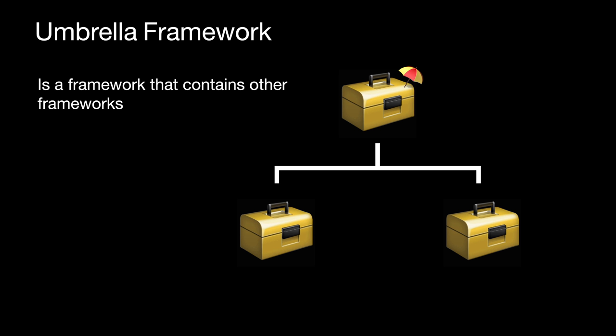An Umbrella Framework is a framework that contains other frameworks. You'll have a top-level framework with sub-frameworks. These sub-frameworks could be a dependency, a third-party, or another framework that you are managing. There could be one or more sub-frameworks for every Umbrella Framework.